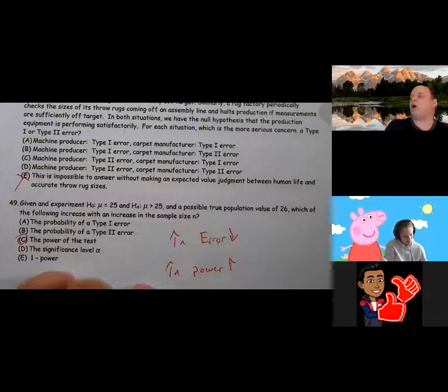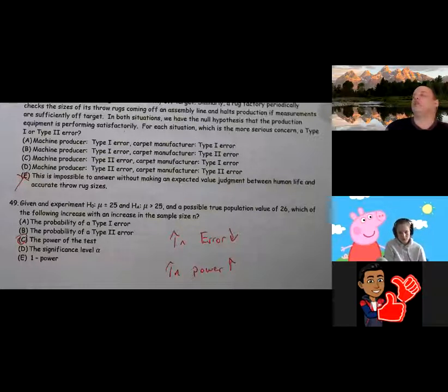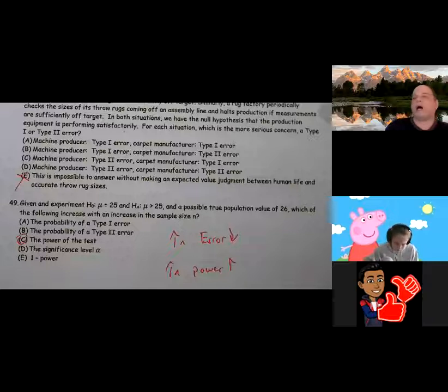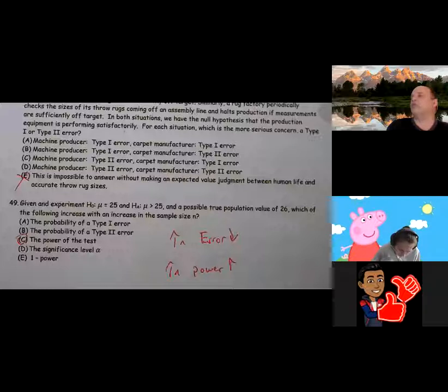What is power? Power is correctly rejecting a false null. Power is a conditional probability that says that we are correctly rejecting the false null. All right? Power is correctly rejecting a false null.